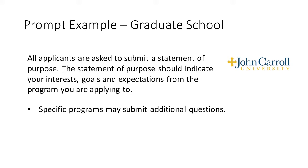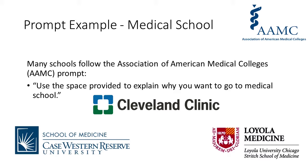Many schools will include a general writing prompt for your application, and additional questions may be included based on that specific program you are applying to. Here's an example of the instructions from the graduate school application at John Carroll University: 'All applicants are asked to submit a statement of purpose. The statement of purpose should indicate your interests, goals, and expectations from the program you are applying to. Specific programs may submit additional questions. Be sure to respond to each question of the prompt.' For medical school applications, many schools follow the Association of American Medical Colleges prompt, which simply says 'Use the space provided to explain why you want to go to medical school.' Schools such as the Cleveland Clinic Lerner College of Medicine of Case Western Reserve University and Stritch School of Medicine at Loyola University Chicago will direct you to AAMC's website to complete your application through the American Medical College Application Service.